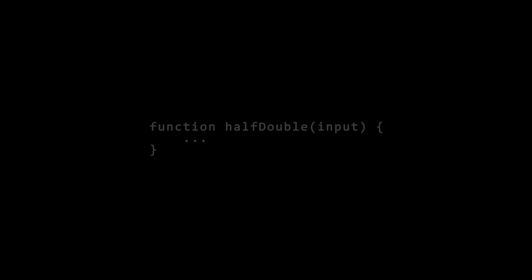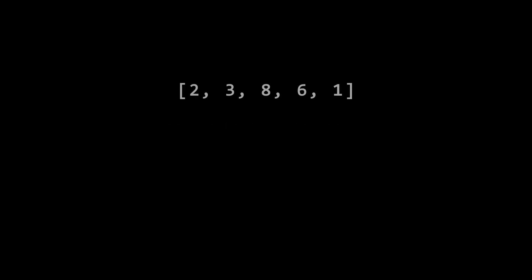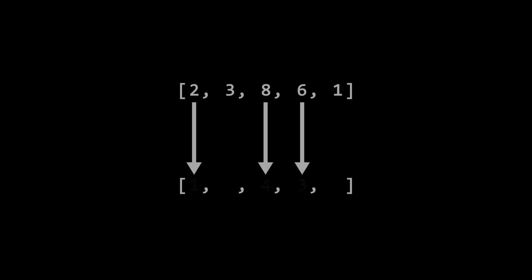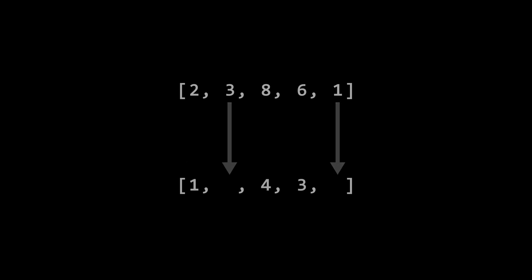Today's task is to implement a function that, given an array of integers, outputs a different array so that every even value is halved and every odd value is doubled. All clear — begin!